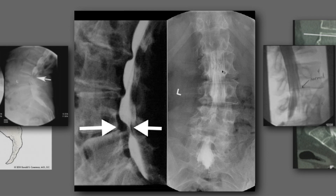On the AP view, this is what the cascading myelogram looks like above and below the level of the cutoff, and here we see no dye, indicating significant narrowing of the canal.